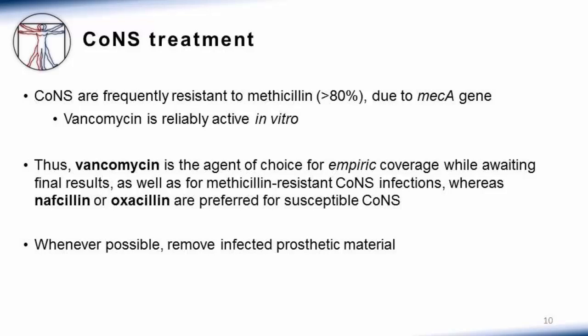If you have a methicillin susceptible isolate — similar to the scenario with MSSA, methicillin susceptible staph aureus — then you would switch the patient to nafcillin or oxacillin. Whenever possible, you would want to remove infected prosthetic material when there's a coag negative staph infection. It's not quite as absolute as with staph aureus, and some catheter-related infections can be successfully treated with retention of the catheter. But as a general concept, infected prosthetic material should be removed, including when infected with coag negative staph.